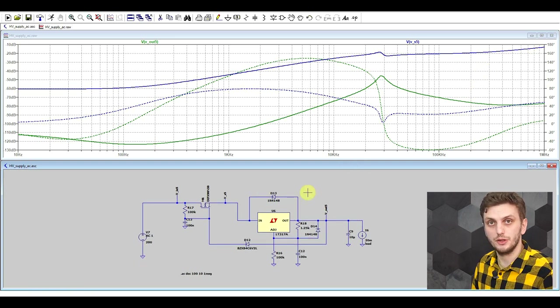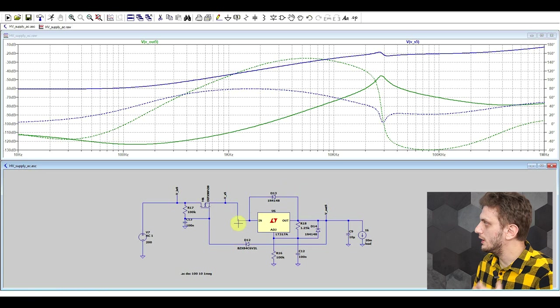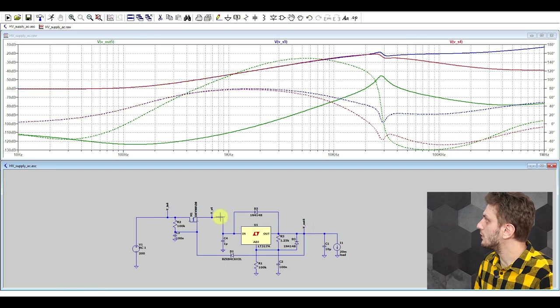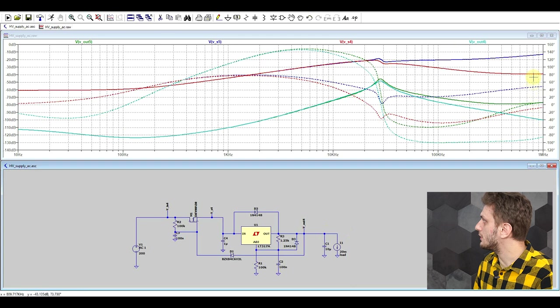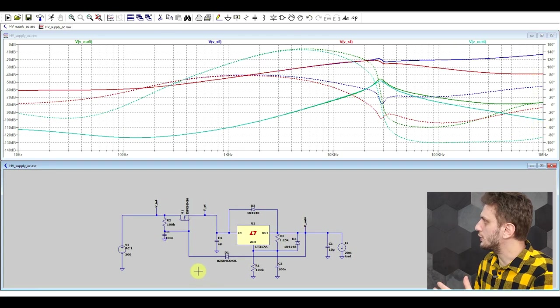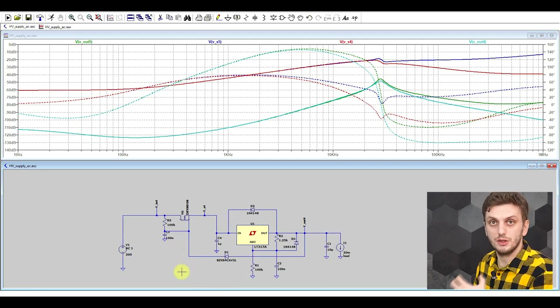So the first thing we can do to try to improve the behavior is to add a capacitor right in between the two stages. So here I have the exact same circuit, but with the one microfarad capacitor added in between. Now if we look at the first transistor, we can see that its behavior is much better already at higher frequencies, and then we see the same improvement translated after the LM317.